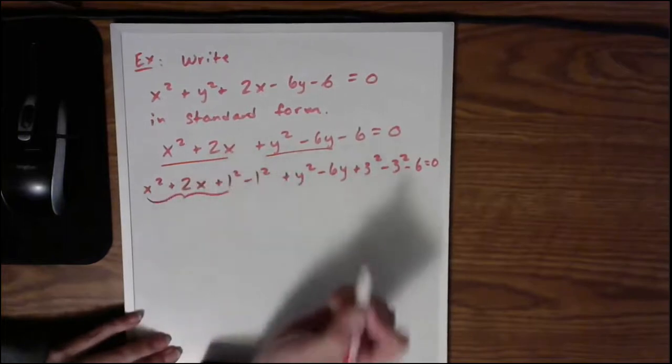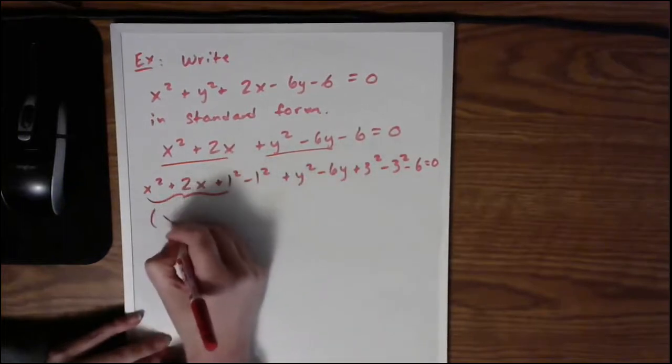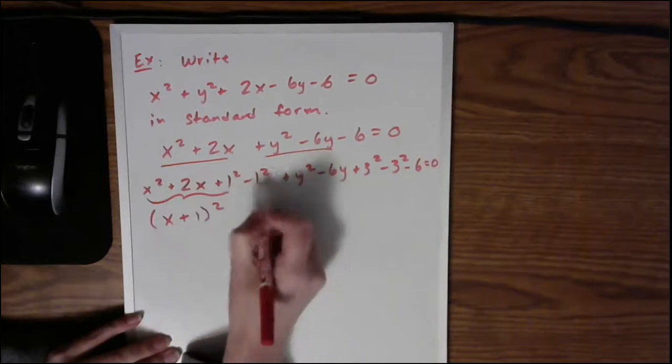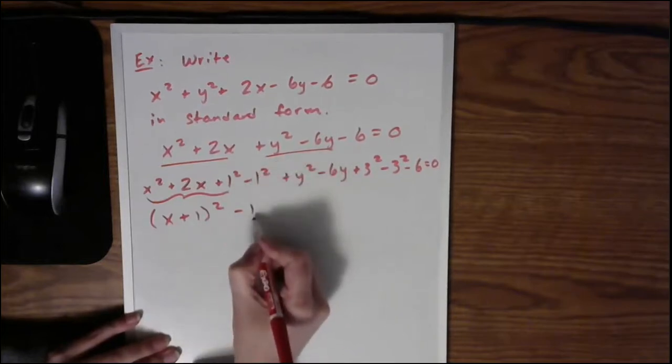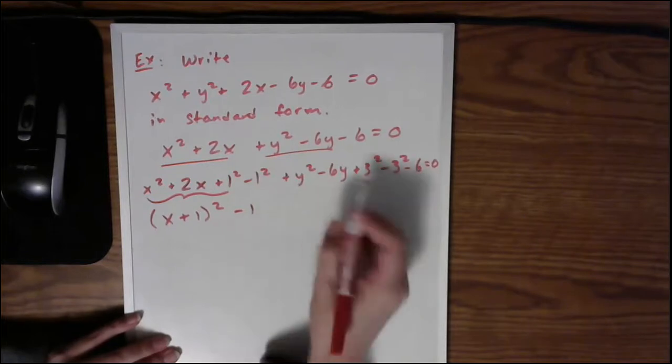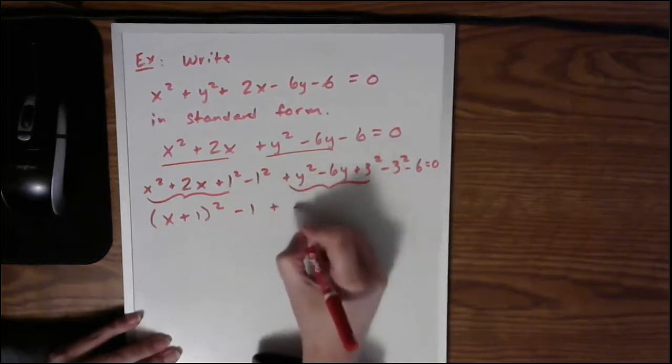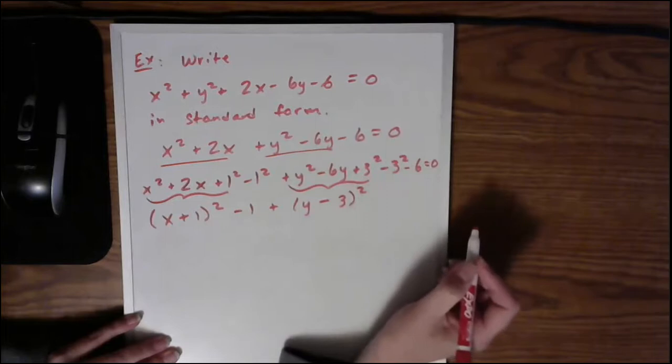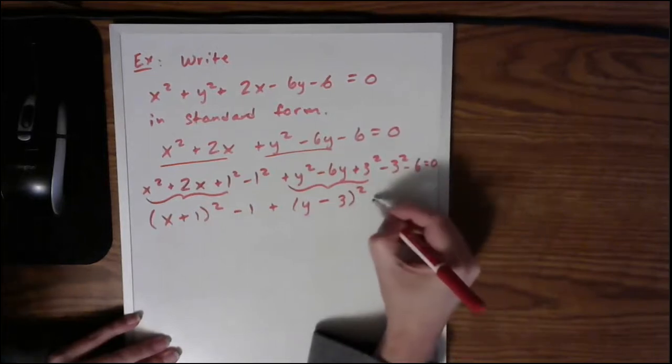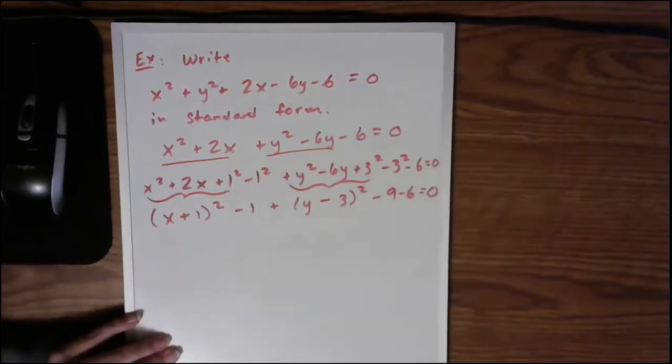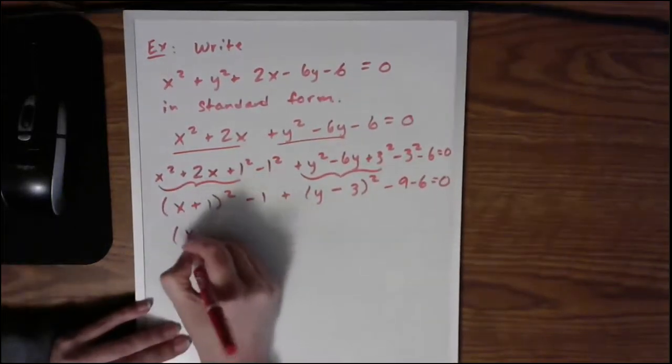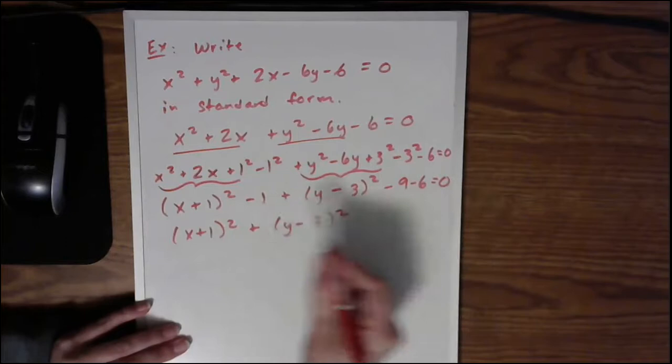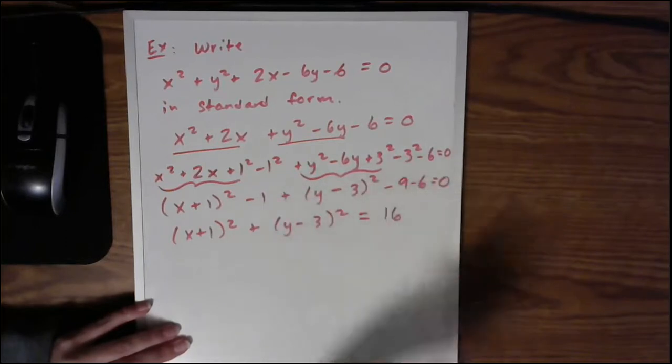Now let's start our factoring. So remember the point is to get these as binomials squared. So pull the x, the symbol and the 1. Don't forget you still have -1² or -1. Then do it for the y's. So then I will have (y - 3)². Don't forget you have this -9 - 6 and = 0.